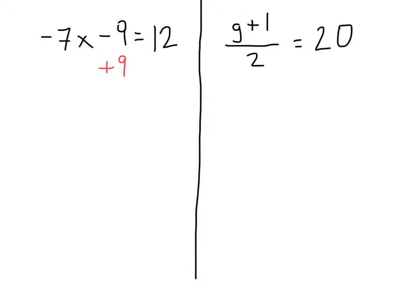We add 9 to the left and add 9 to the right. On the left side, the minus 9 and plus 9 cancel out, so we rewrite everything else. We have negative 7x is equal to 12 plus 9, which is 21. This should look familiar — negative 7x equals 21 is now a one-step equation, which we have learned previously.